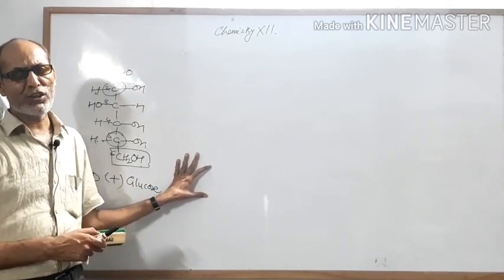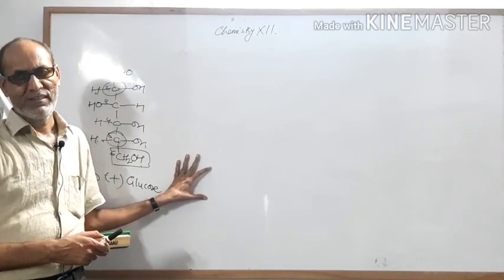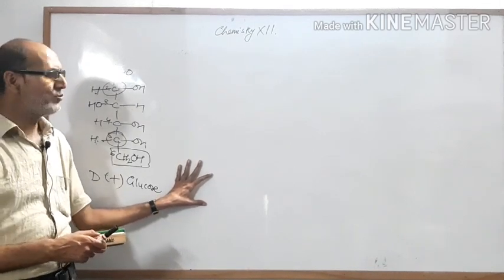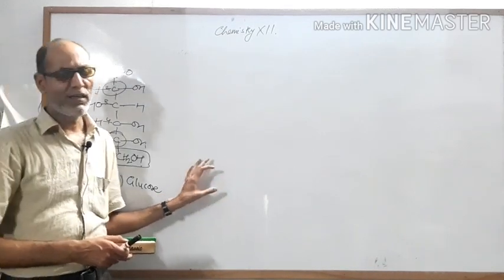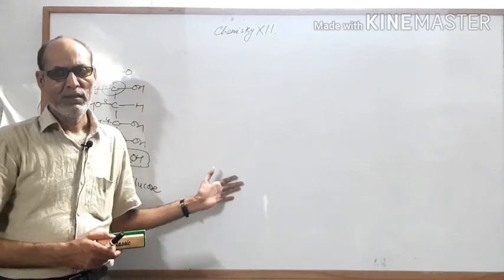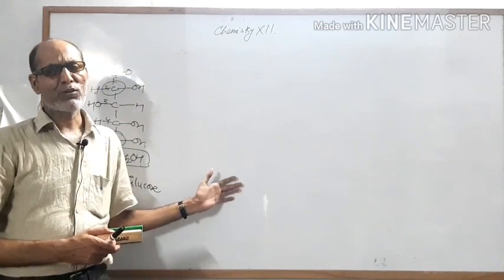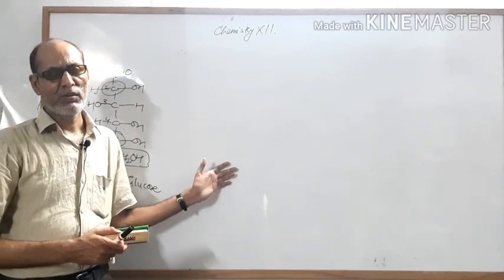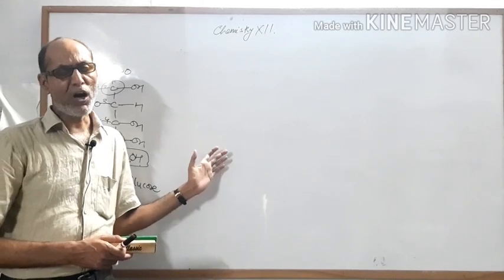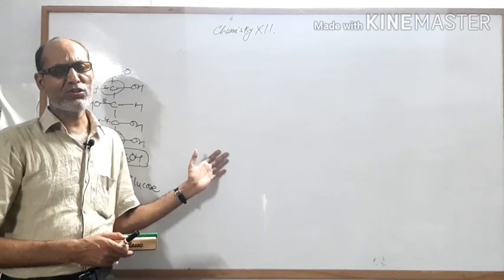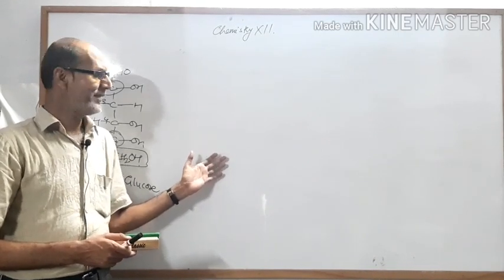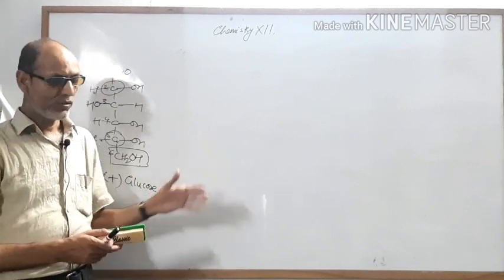Before going to prepare the Fischer projection formula, I want to ask you a question. Question number two — note it down: How many aldehyde groups and alcohol groups are present in glucose?